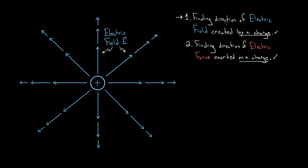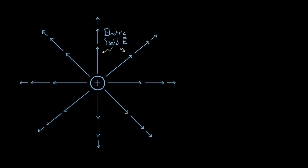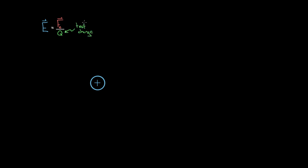Let's figure out how to determine the direction of the electric field created by a charge. We know the definition of electric field is the amount of electrical force exerted per charge. If you took some test charge — think of this Q as a test charge — we usually make this a positive test charge, so this is easier to think about.